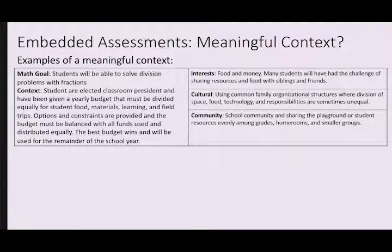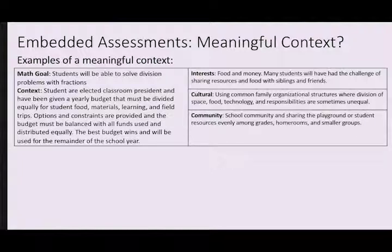If I think about how all these might be most effective, the context I might choose is that students are elected as a classroom president and have been given a yearly budget that they must divide for food, materials, learning, and field trips. Options and constraints are provided, things change, and the budget must be balanced with all the funds used and distributed equally. The best budget wins and will be used for the remainder of the school year. So I'm saying: this is how much money we have allocated — from petty cash, personal funds, or fundraisers — let's make a budget and plan out how we're going to use it. Then I introduce changes about how the cost might change fractionally, and they have to adjust their budgets accordingly. That could be a real-world context that some students might really get into.